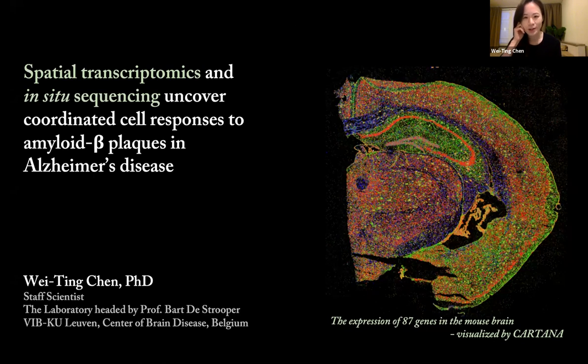My work is not really focusing on the oligodendrogenesis side, but in this presentation you will hear how we use spatial transcriptomics and in-situ sequencing to unbiasedly discover a coordinated network among multiple cell types, including oligodendrocytes, in their response to the pathological hallmark of Alzheimer's disease.